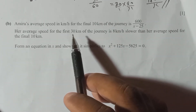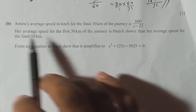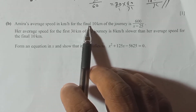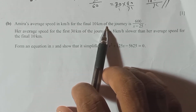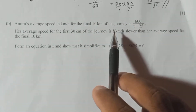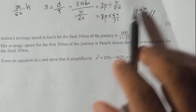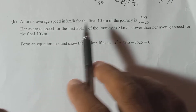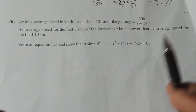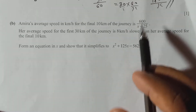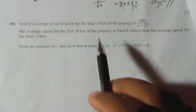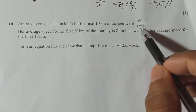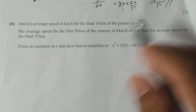Now let's consider the next part. Read the whole question completely to understand. They tell Amira's average speed in km per hour for the final 10 km. Earlier we discussed the first 30 km and found its average speed. Total journey is 40 km, so 10 km remains. The average speed for the last 10 km is given as 600 over X minus 25.